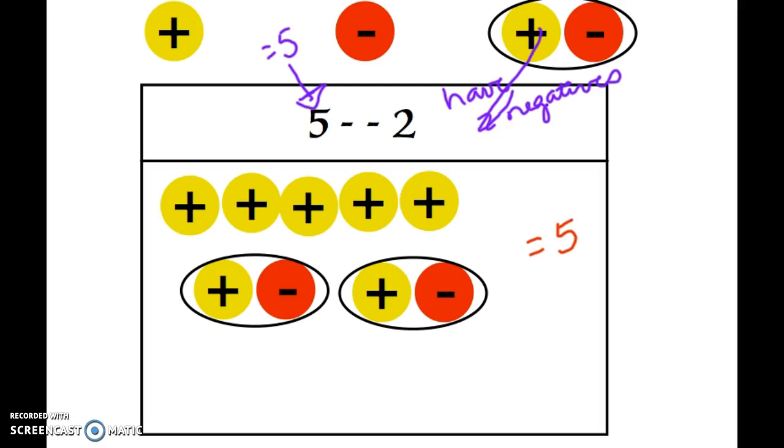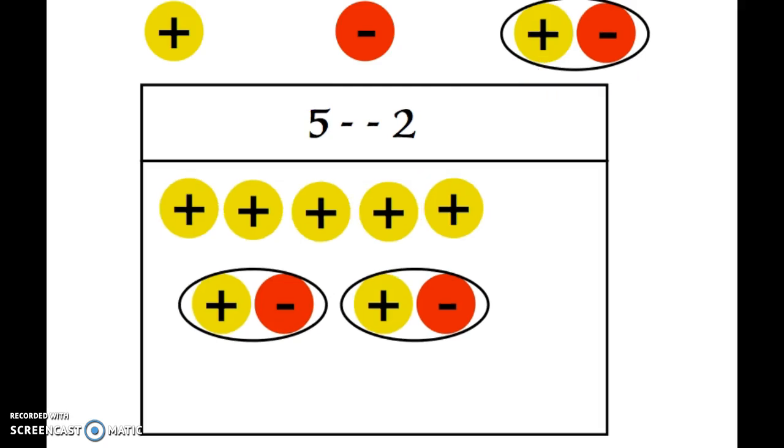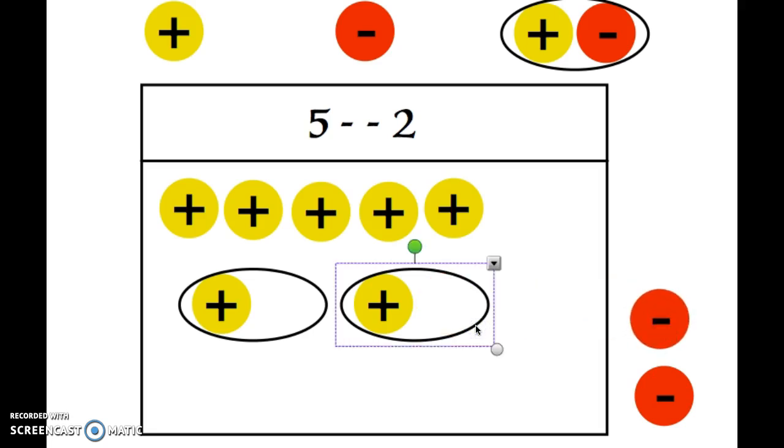So now when I'm out there, I'm ready to do the second step. 5 take away negative 2. So now what I'm going to do is take away two negatives. So notice I'm going to take away one negative. I'm going to take another negative away. And if these bother you, you might want to get rid of the circles as well. But I had 5. I took away negative 2. And notice what's left on the board is 7.